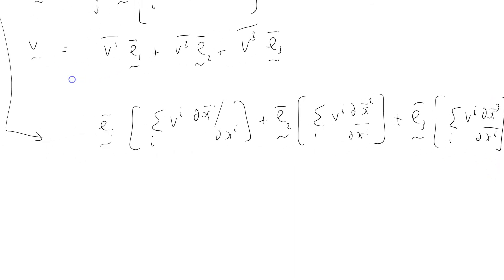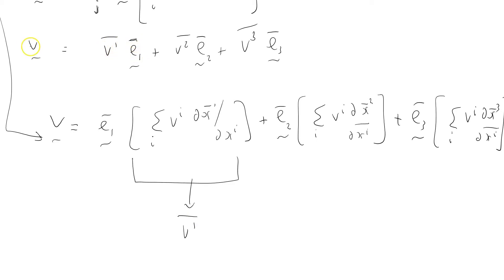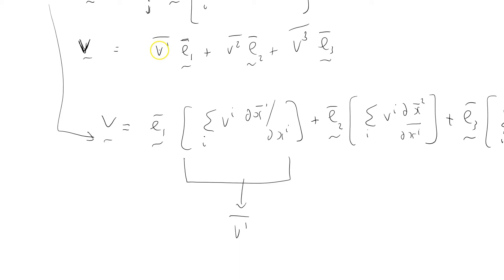In words, I've got two representations for the same object. Here I have v1 bar times e1 bar plus v2 bar e2 bar plus v3 bar e3 bar, and I've just derived the same thing. So it's clear that the coefficient of e1 bar must be v1 bar by definition — v1 bar is the thing you multiply e1 bar by to get v. Similarly v2 bar is the coefficient of e2 bar.